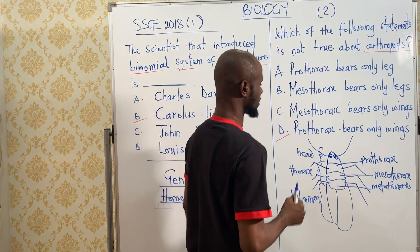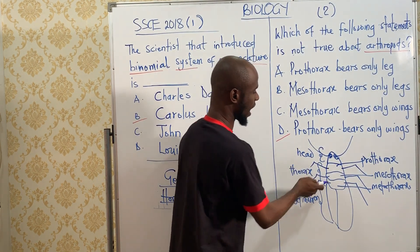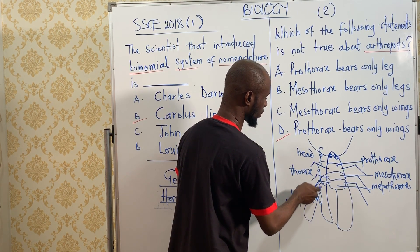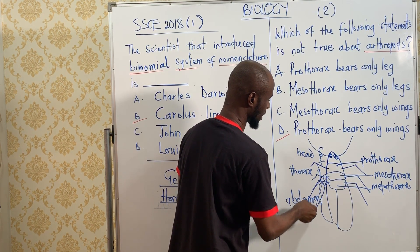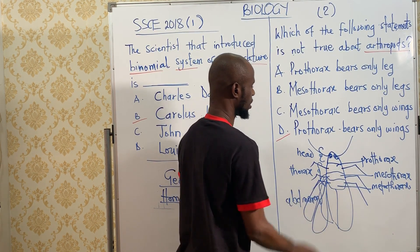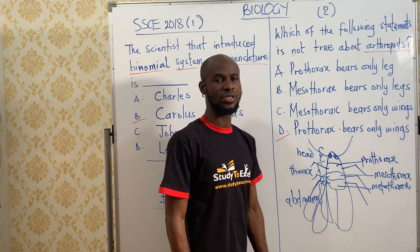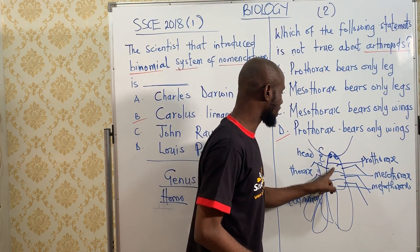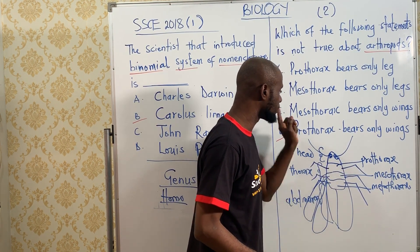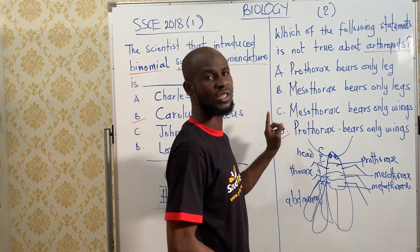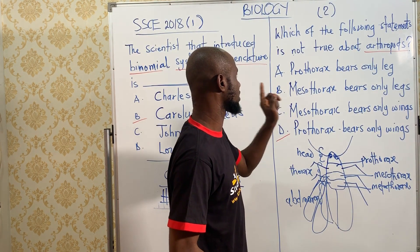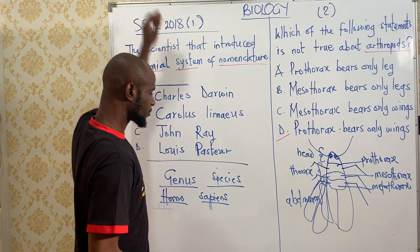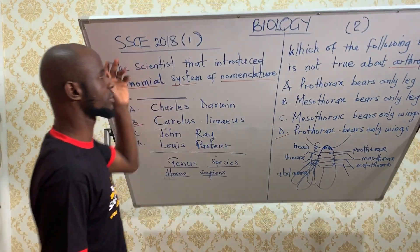The first segment, the prothorax, bears only legs. The middle segment and the last segment bear the wings. We have wings in the mesothorax and wings in the last segment, the metathorax. That means the first segment called the prothorax does not bear wings, and that is why we choose the option: the prothorax bears only wings as the statement that is NOT true.